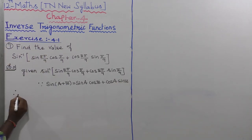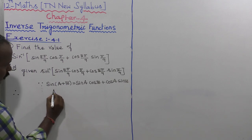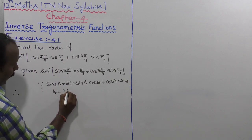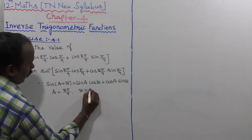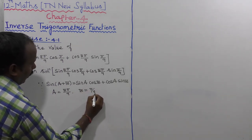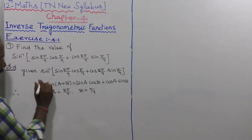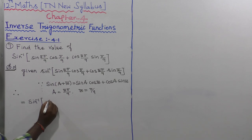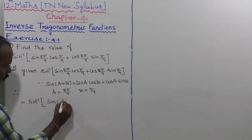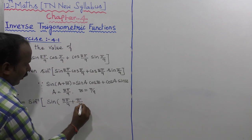Therefore, A is equal to π/9 and B is equal to π/9. So the expression becomes sin inverse of sin(π/9 + π/9).